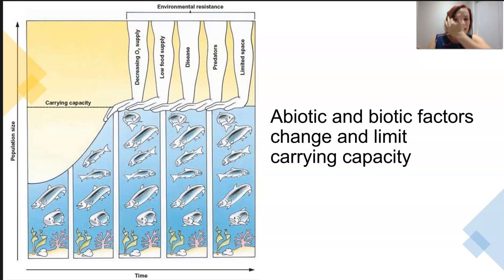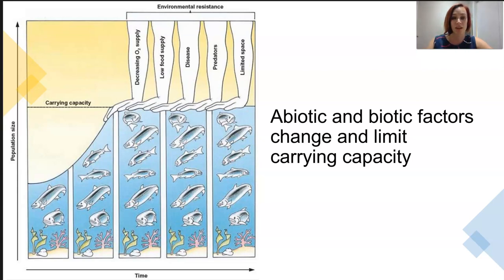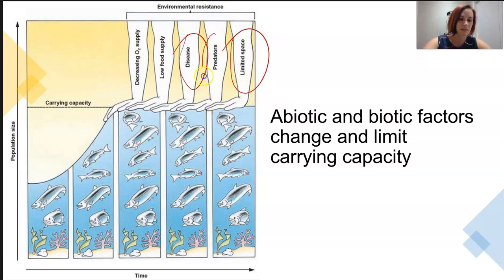These abiotic and biotic factors keep coming up. This is a really good diagram because it shows that population growth might rise, but eventually it's going to plateau out because it cannot fit anymore. There might be limited space, there might be a disease, there might be more predators in a particular region, or a low food supply.